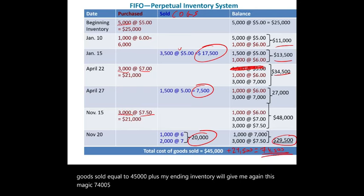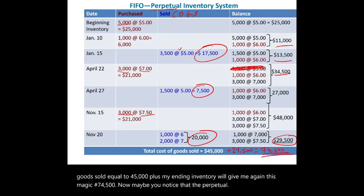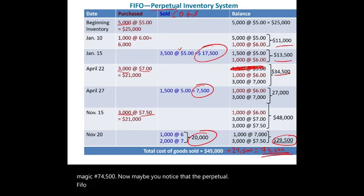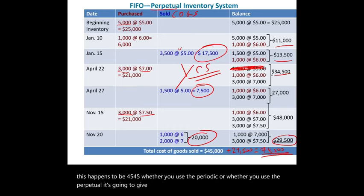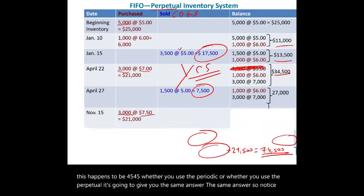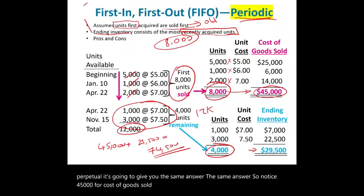Total FIFO perpetual cost of goods sold: $17,500 + $7,500 + $20,000 = $45,000. Plus ending inventory $29,500 equals $74,500. Notice that FIFO perpetual and FIFO periodic give the same answer — this is unique to FIFO. Whether you use periodic or perpetual, FIFO always produces identical results.